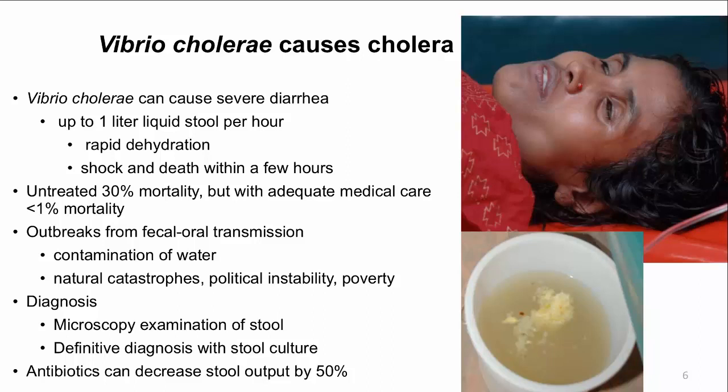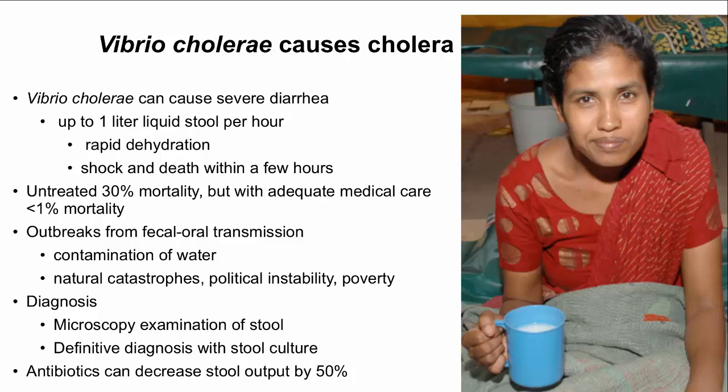Transmission of cholera is fecal-oral. This woman drank unboiled water contaminated with infected human stool. Transmission is worse in outbreak situations involving natural catastrophes, political instability, and poverty with poor infrastructure for clean water. The cholera outbreak in Haiti is a good example, as a natural catastrophe struck an already poor infrastructure. Diagnosis is mostly clinical in the right setting. A wet mount of stool can show Vibrio darting under a microscope, but definitive diagnosis is with stool culture. Cholera is the only watery diarrhea where antibiotic therapy is important — it can decrease stool output by 50%.